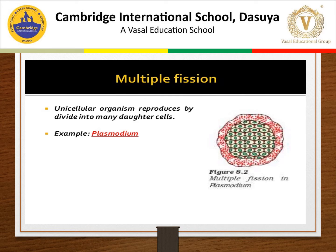Multiple fission occurs in unfavorable conditions. During multiple fission, the organism secretes a protective covering called a cyst around the cell. Inside the cyst, the nucleus divides several times to form a number of daughter nuclei. Each daughter nucleus is surrounded by cytoplasm, forming a large number of daughter individuals. When favorable conditions return, these daughter individuals are set free and each grows into a complete organism. It occurs in Plasmodium, the malarial parasite, which produces about 1,000 daughter organisms called merozoites that invade red blood cells and cause malaria.